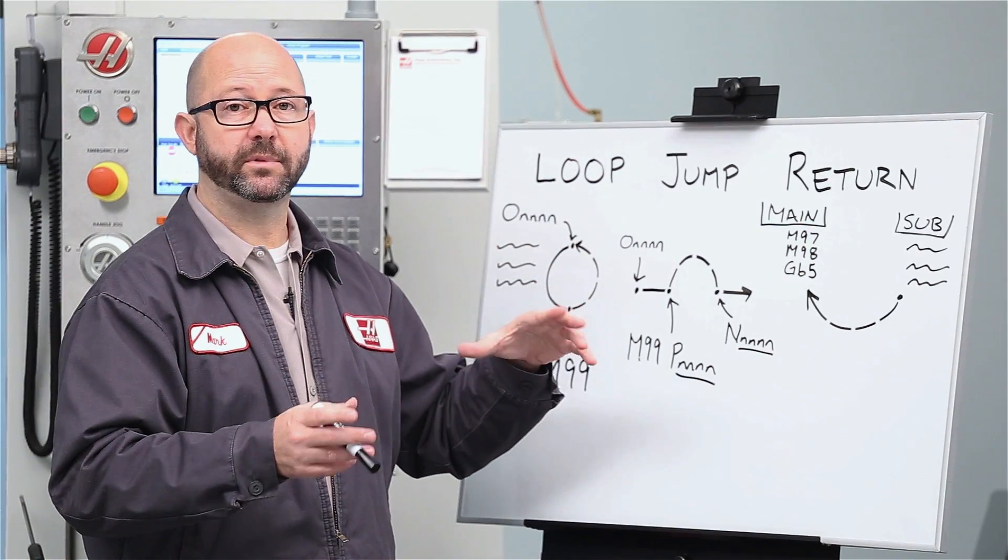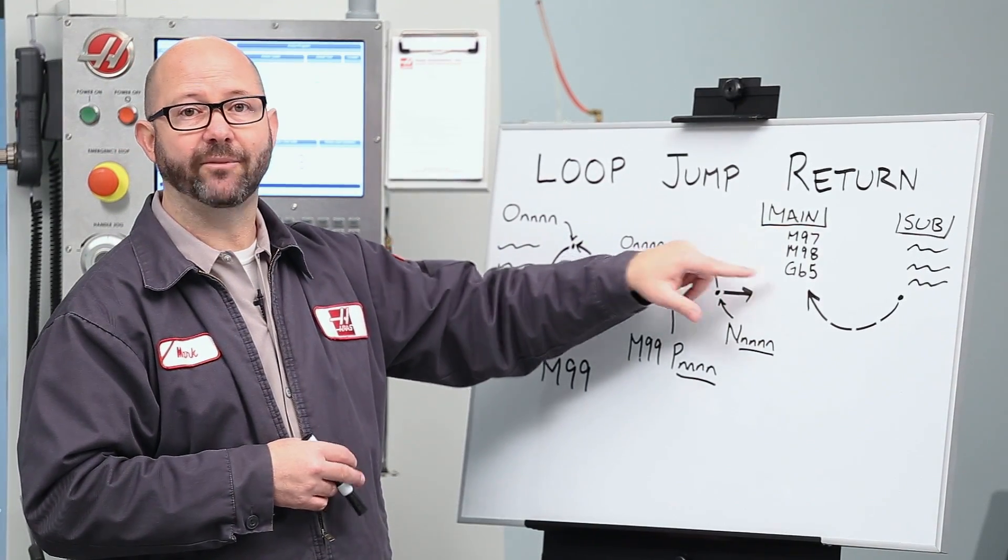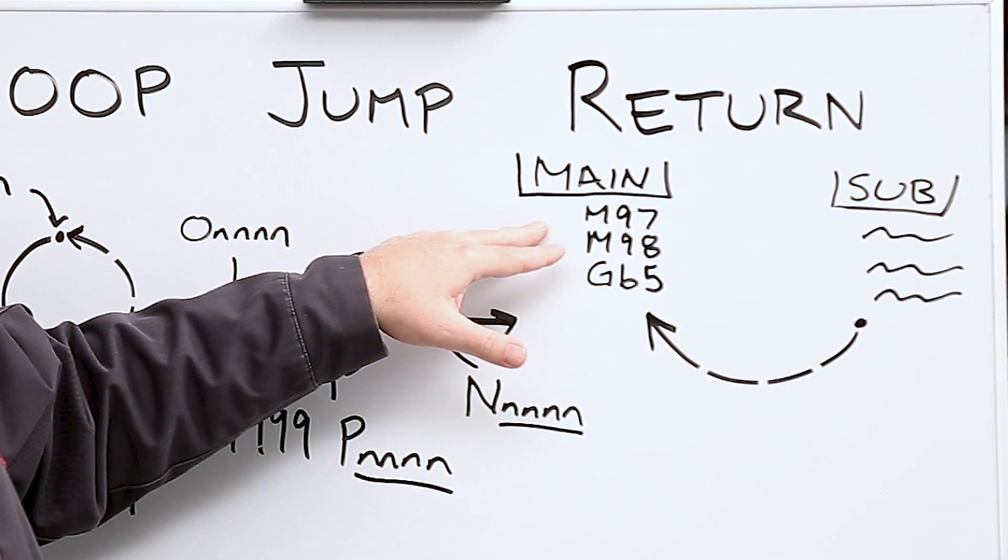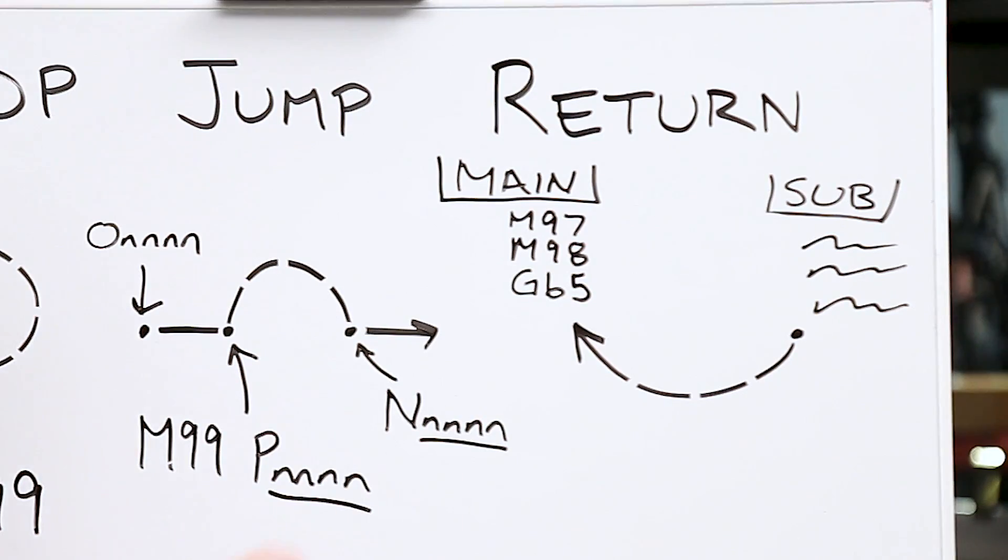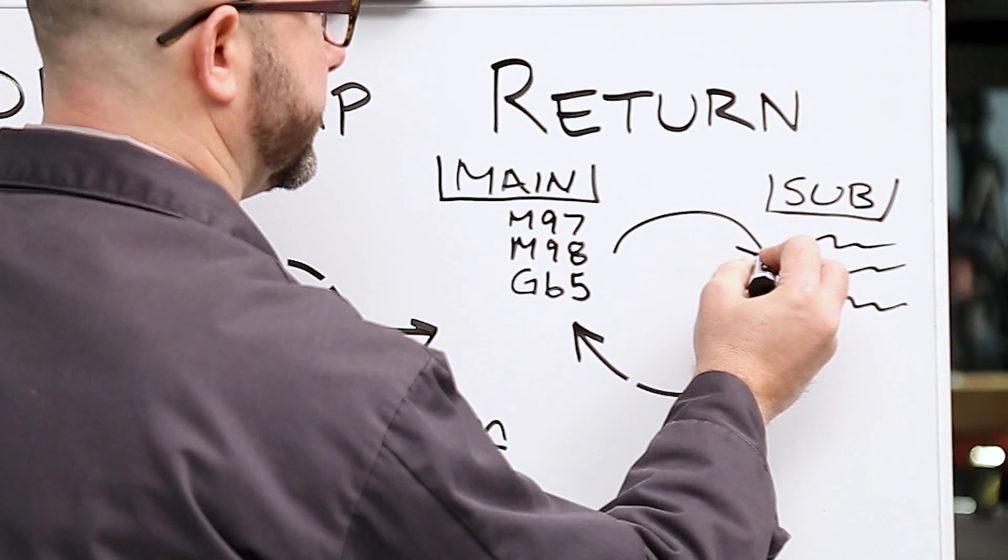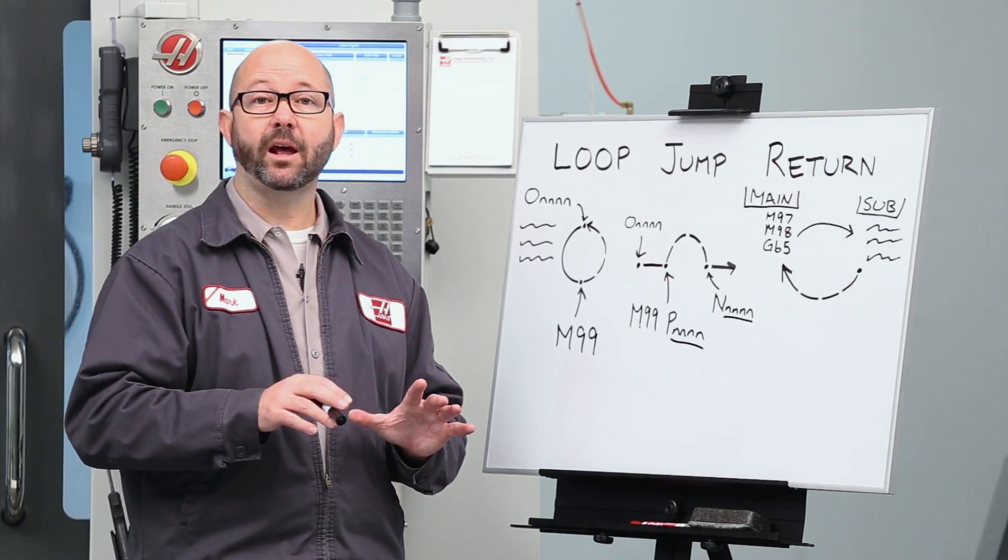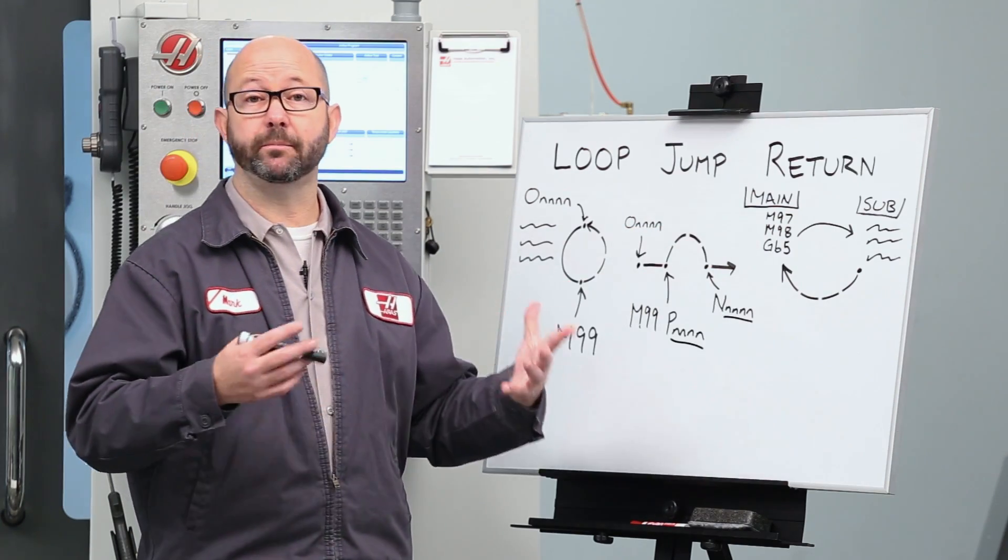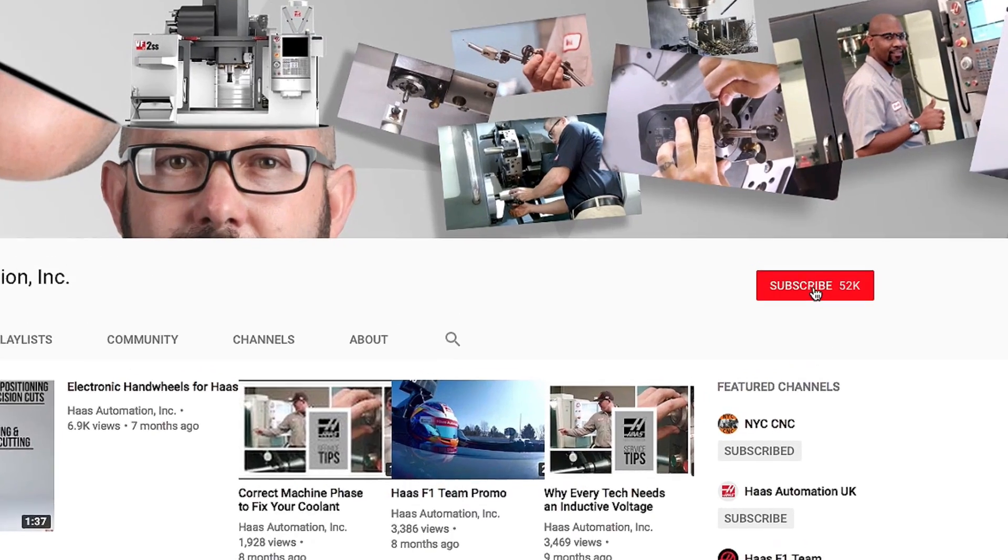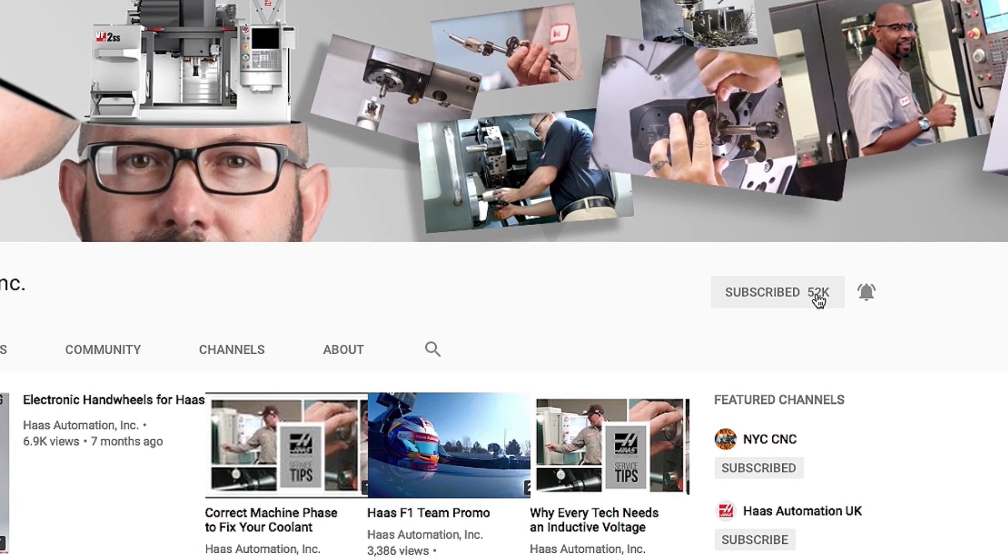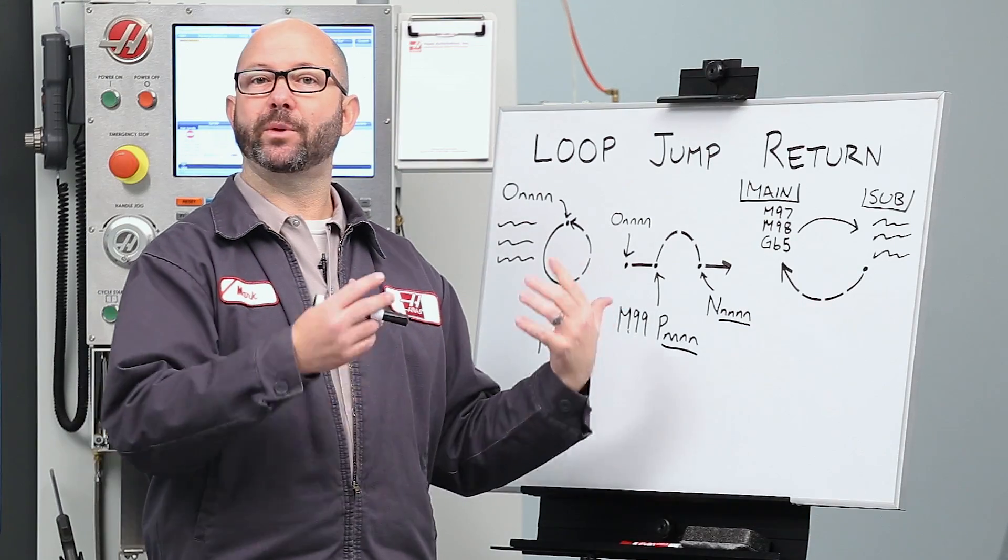Now, the program that contains our M97, M98, or G65 is known as our main program, and the program or program segment that we're going to jump to with these codes is known as our subprogram. We've made other videos on these codes, so check them out. Now, if those videos aren't released yet, then subscribe to the Haas YouTube channel so you don't miss them. So, these codes get us to our subprograms, but how do we get back?